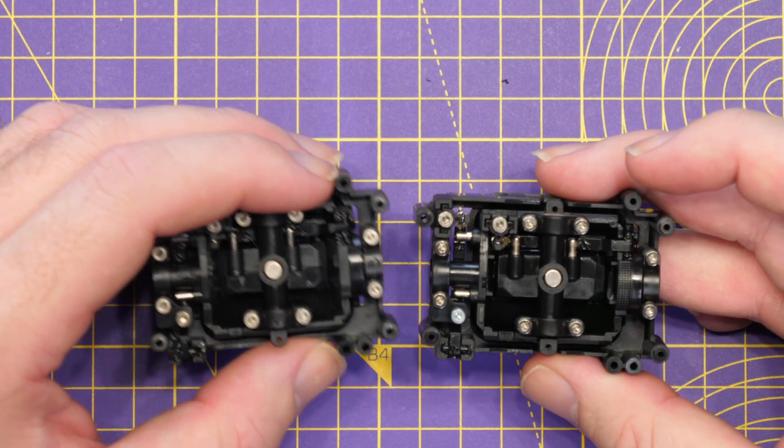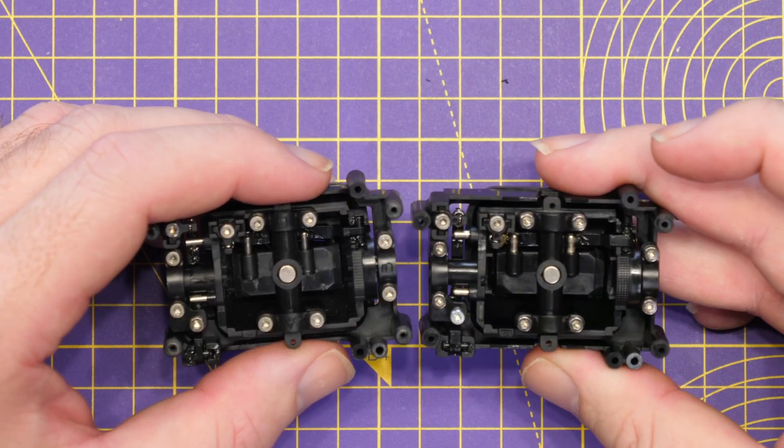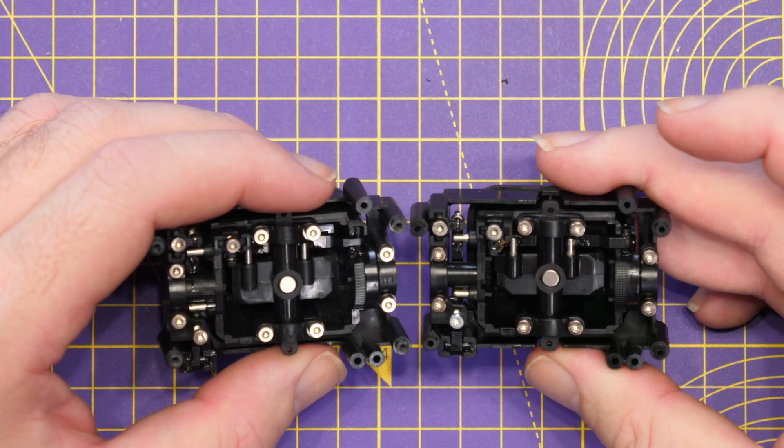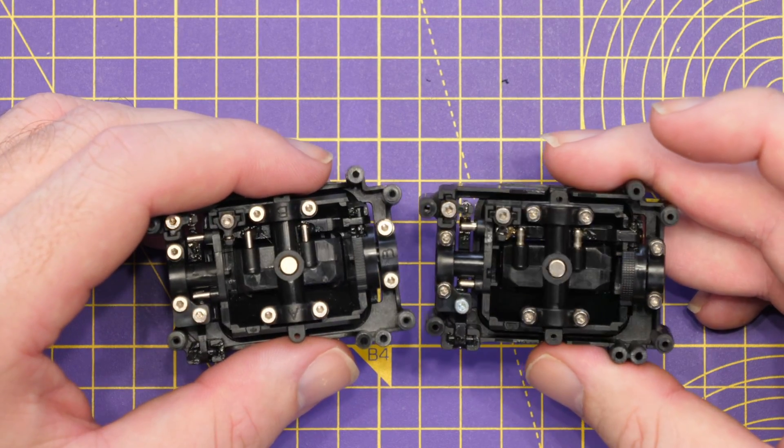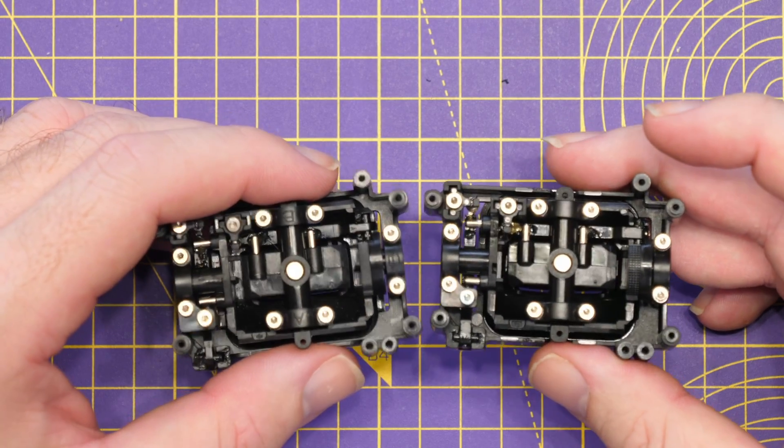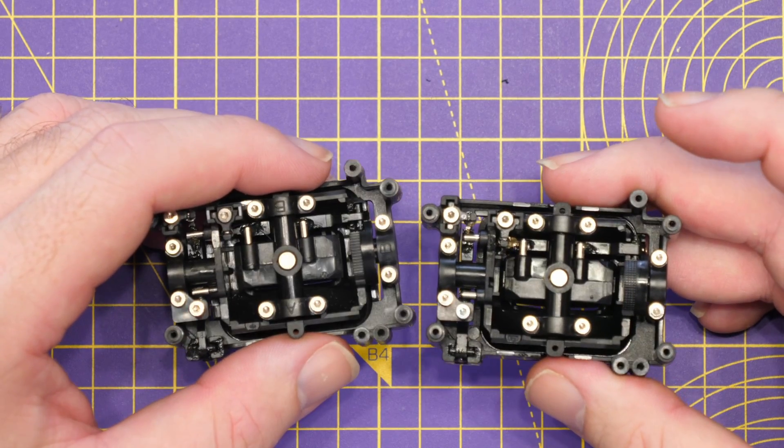But everything just looks a little bit smoother. The plastics look a little bit tidier and that's obviously where they've improved the tolerances in the gimbal itself. No massive differences to look at other than that metal lever, but just little changes here and there that do improve how the gimbal feels.